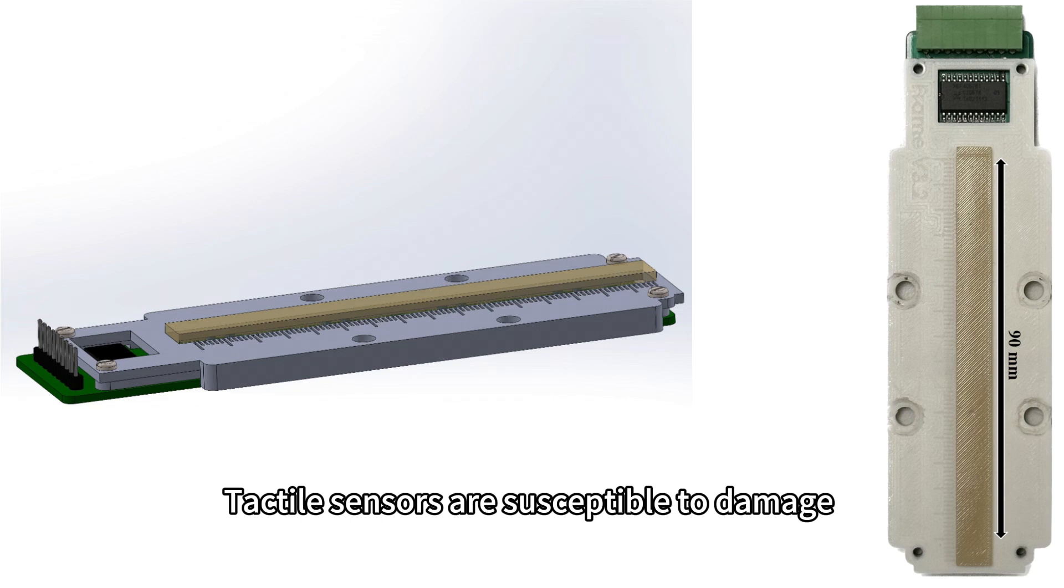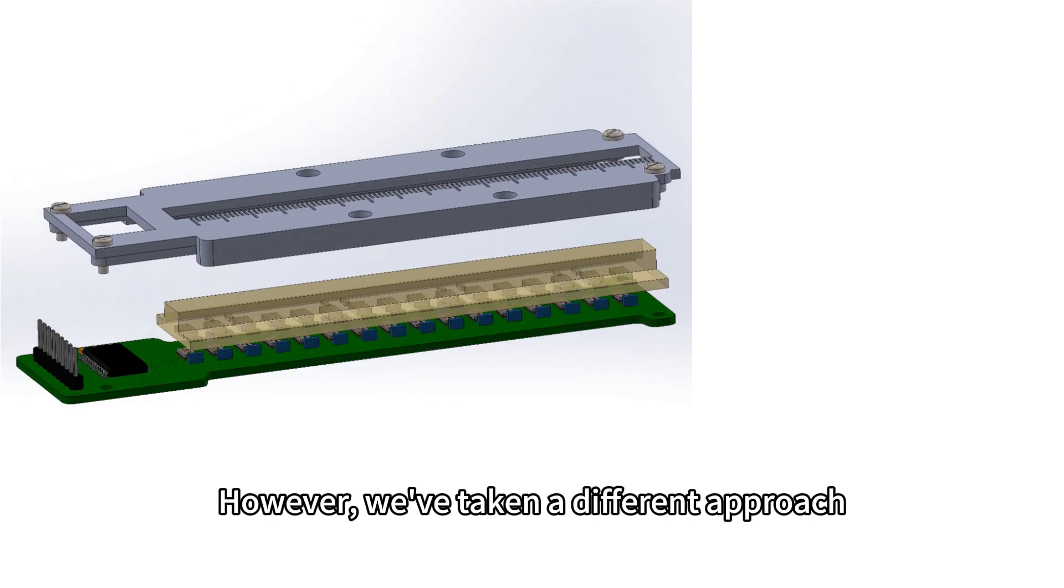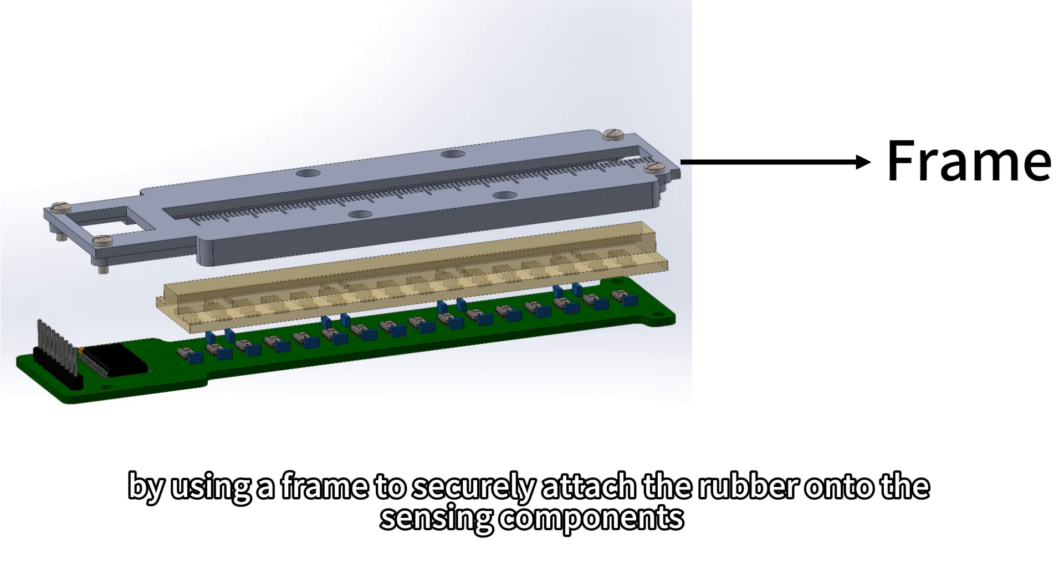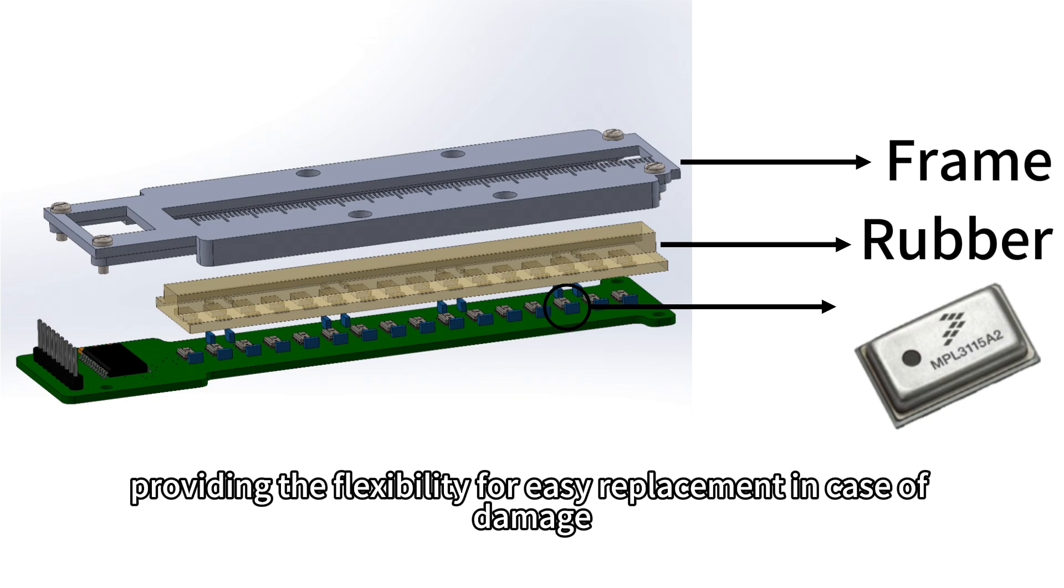Tactile sensors are susceptible to damage. Traditional barometric tactile sensors often involve molding rubber onto the sensing units. However, we've taken a different approach by using a frame to securely attach the rubber onto the sensing components, providing the flexibility for easy replacement in case of damage.